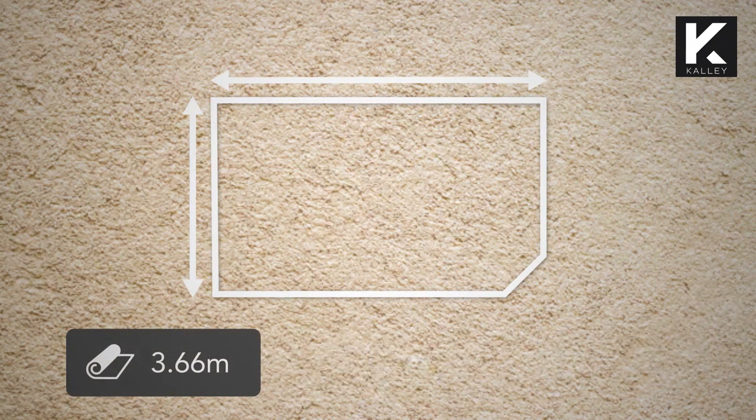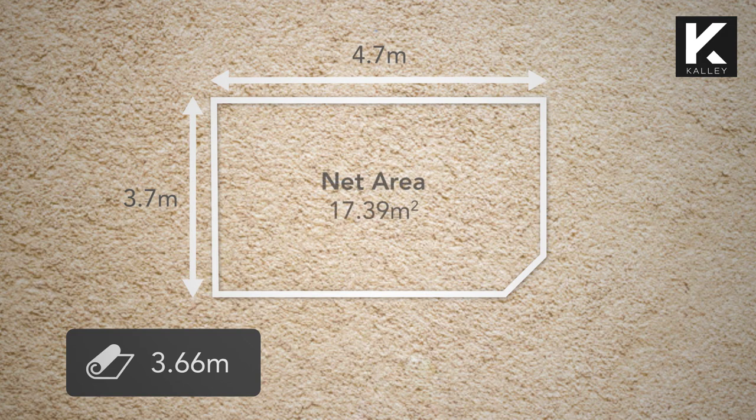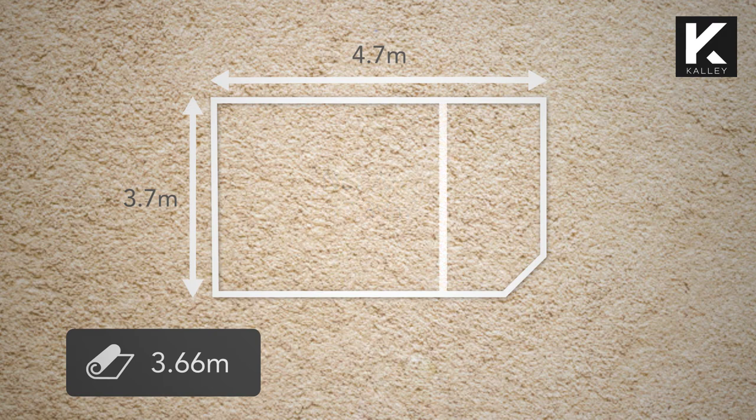Let's look at an example for a room where both axes are greater than the 3.66 metres. If a room is 3.7 metres by 4.7 metres, the net area is 17.39 metres squared. When you have a 3.66 metre carpet in this room, the calculations are different as both axes are greater than the width of the carpet. That means you will have to have a joint in the carpet.